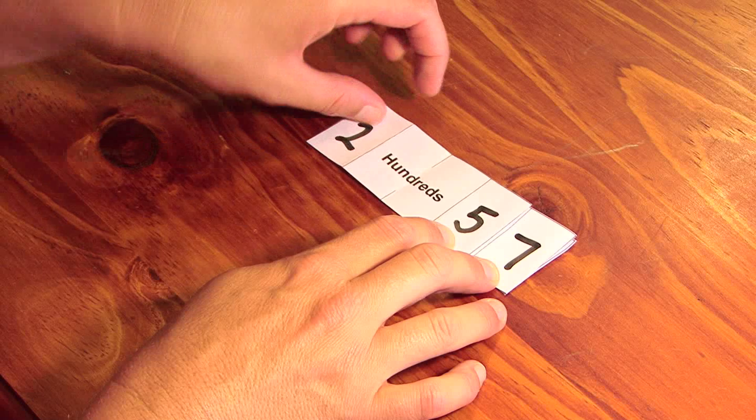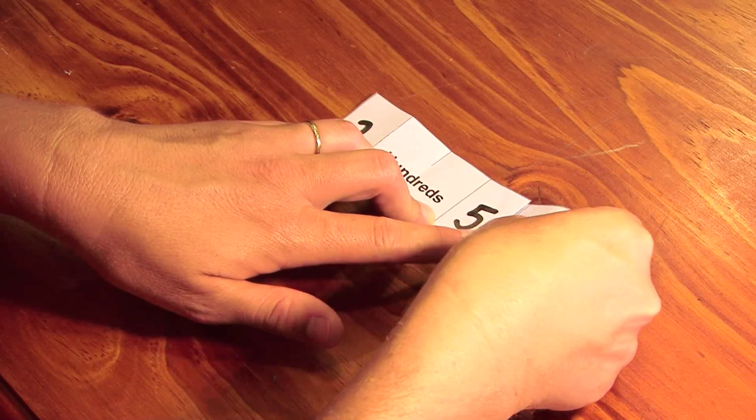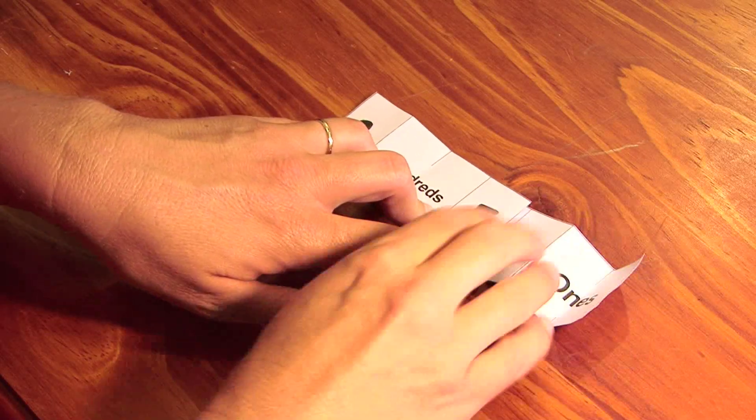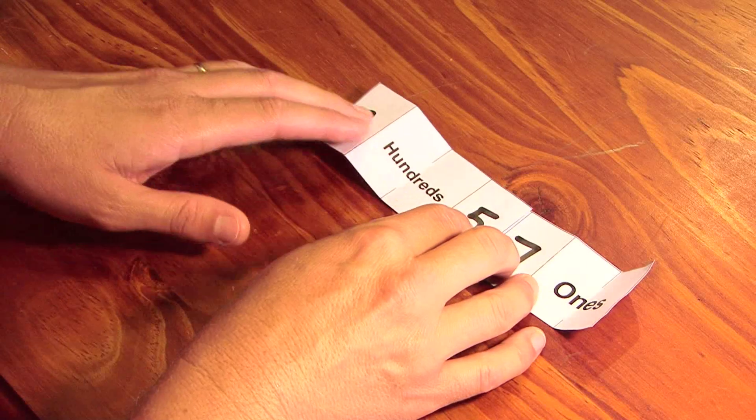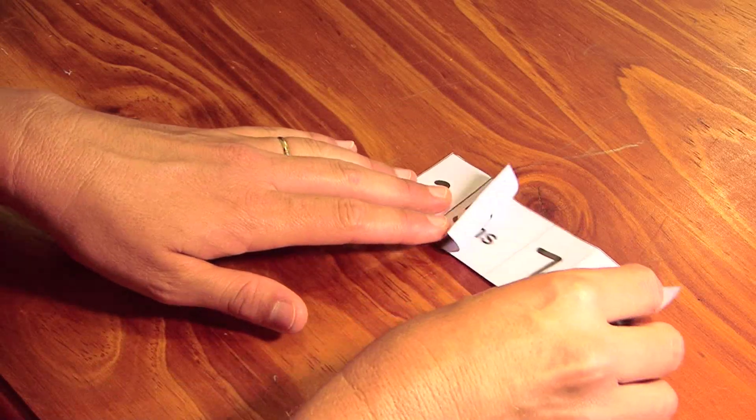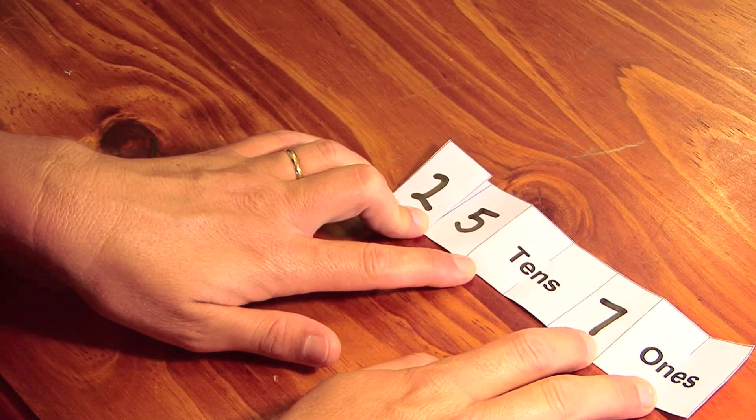So we can read it as 257 ones, or we can read it as 25 tens and 7 ones.